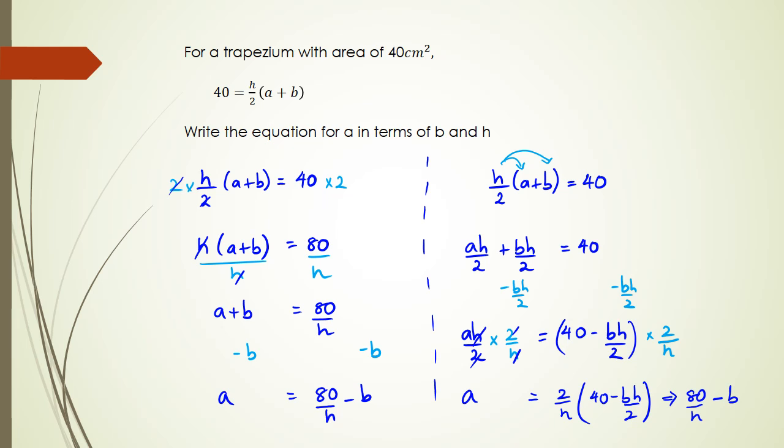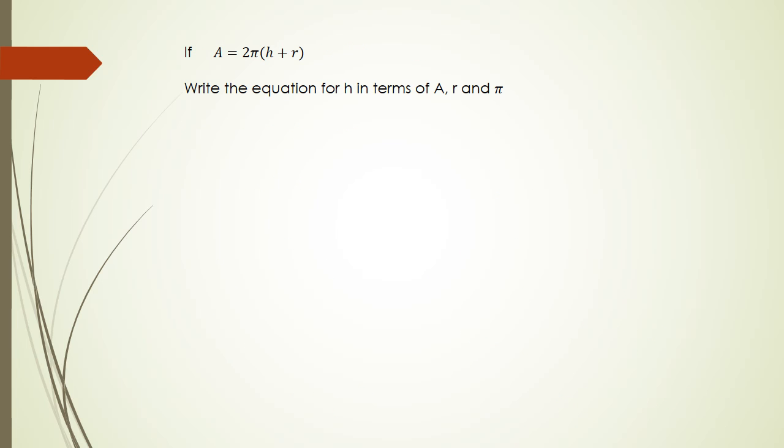Let's have a look at the next question. In this question we are saying that if A equals 2π times h plus r, write the equation for h in terms of A, r, and π. As usual, I'm going to write what I want. Obviously I'm trying to figure out h, so I'm going to write that on the left-hand side. I've got 2πh plus r equals A.